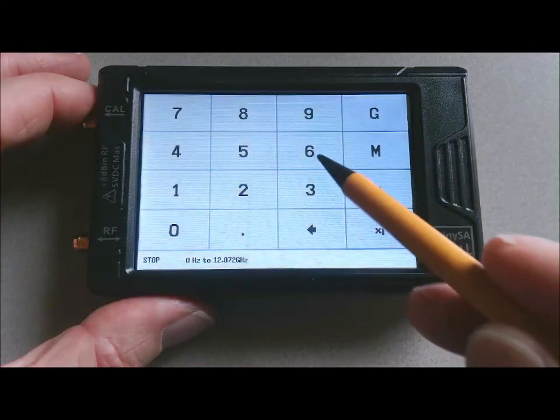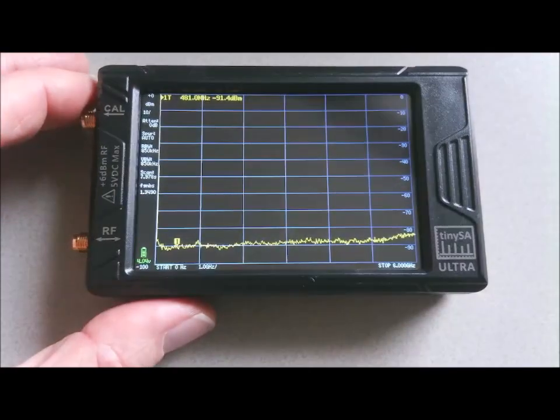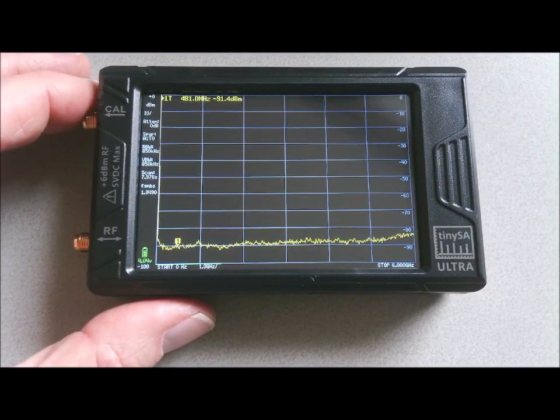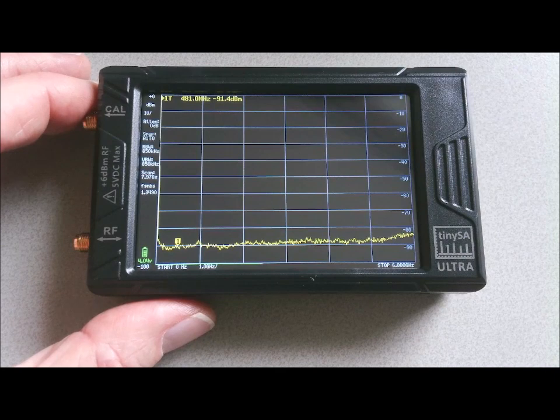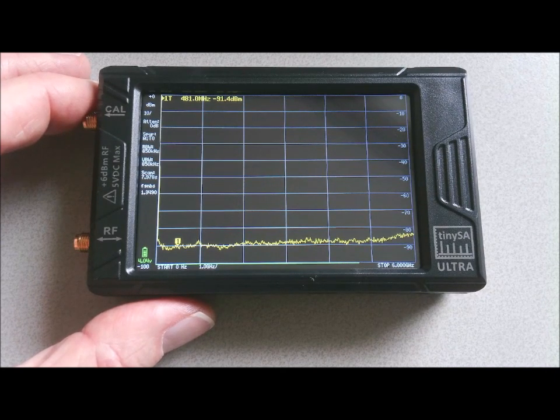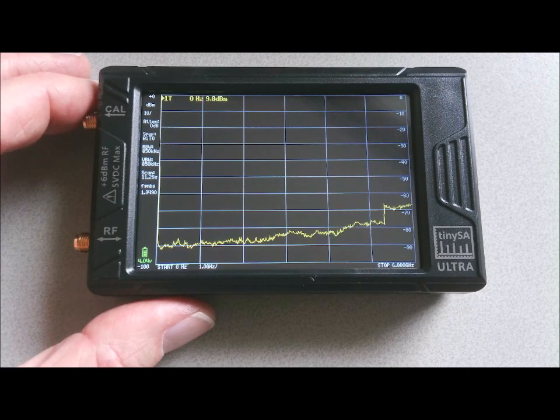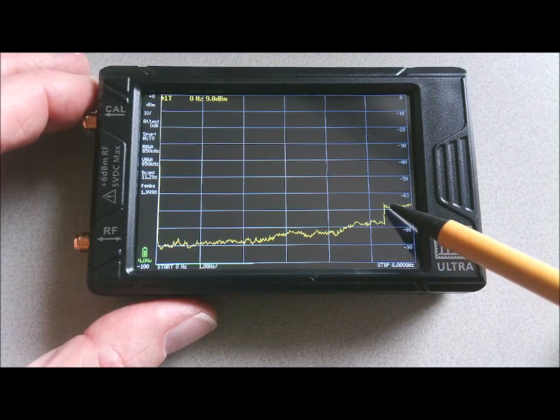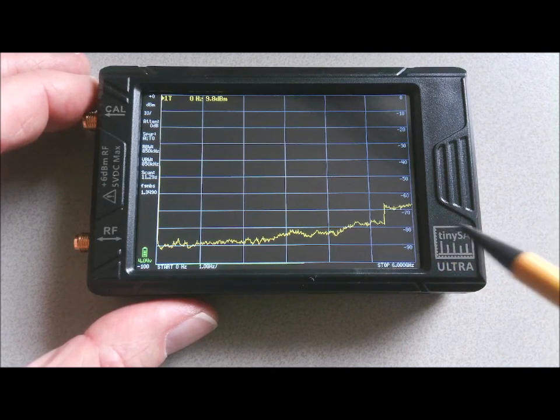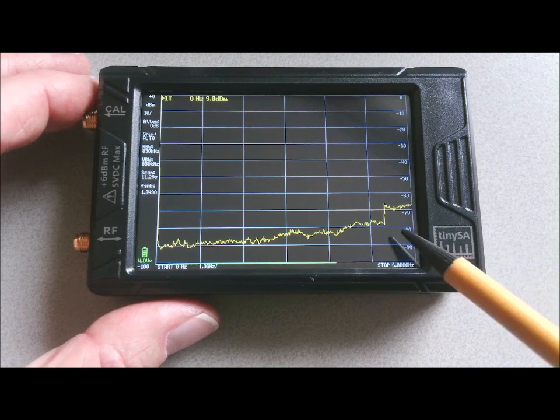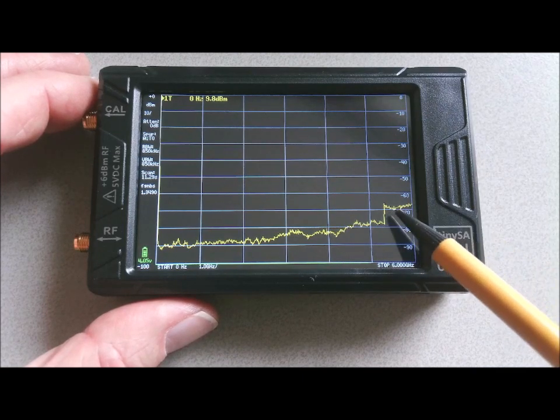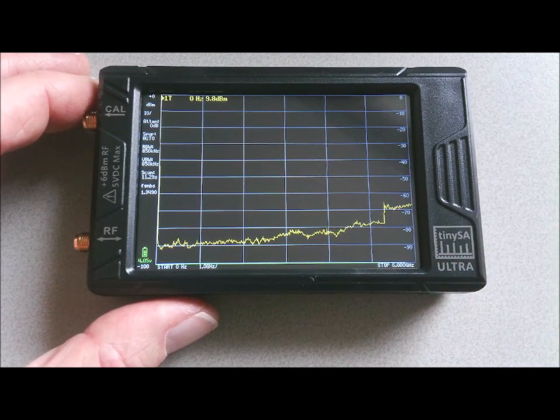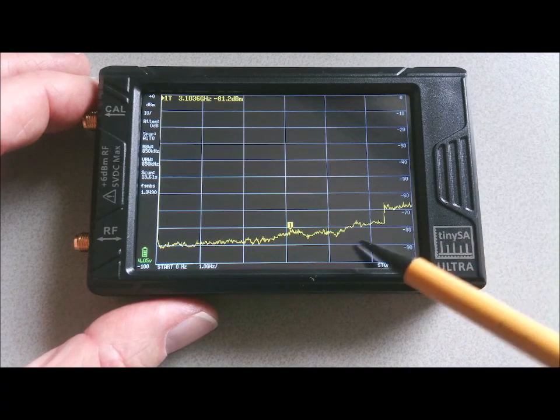I can set the stop frequency to 6 GHz. As you can imagine, the time for scanning increases. And here it is over the full range up to 6 GHz. You see a jump here, and that's because the TinySA switches to another mode at 5.35 GHz, where it has some less sensitivity. And that's reflected in the noise floor.